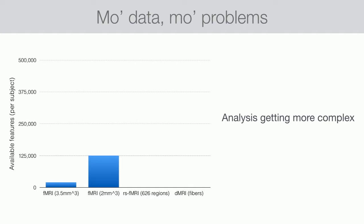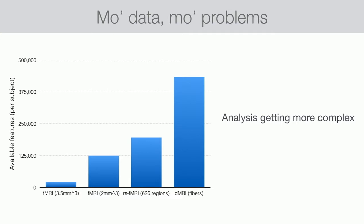Now, as we move into measures like connectivity — for example, resting state functional connectivity matrices — we're looking at covariance across edges. One of my recent studies has about 195,000 analyzable units per subject per brain. The biggest so far is within diffusion imaging: using connectometry, we have 433,000 analyzable units per individual subject. The complexity of our analysis is increasing along with the size of both our samples and our physical data files.